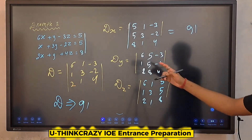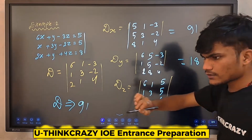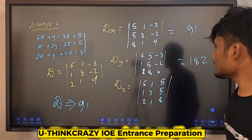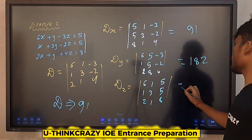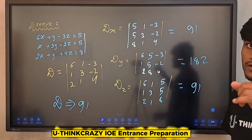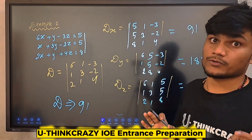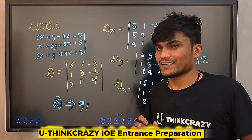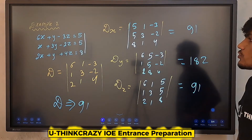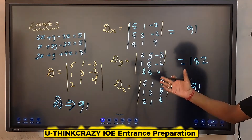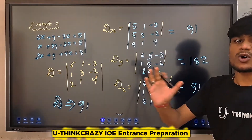Dy = 180. D = 91. I have explained how to find this. It's a little bit long but you want to get it.